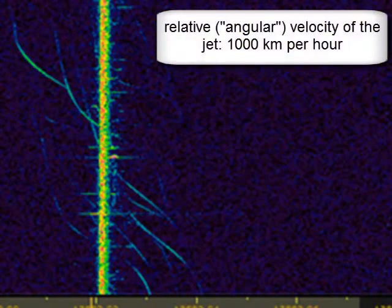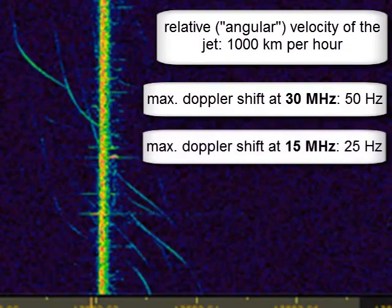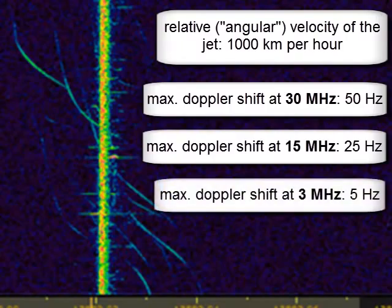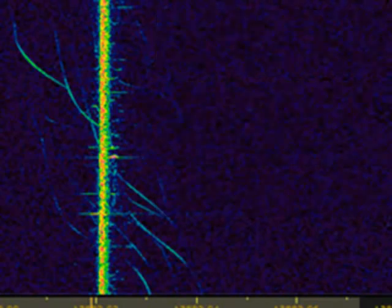A relative velocity of the jet of 1000 km per hour will cause a Doppler shift of maximum 50 Hz at 30 MHz, a maximum of 25 Hz at 15 MHz, and a maximum of 5 Hz at 3 MHz. This is only the case when the jet flies exactly on a line between transmitter and receiver. In normal cases, the Doppler shift is half as high as the highest theoretical values.